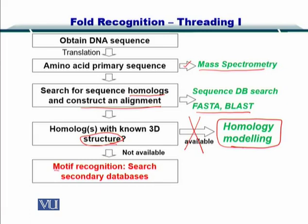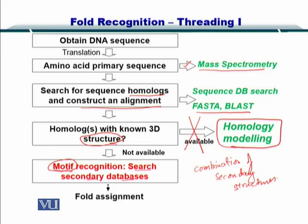In fold recognition or threading, what we do is recognize motifs — that is, combinations of secondary structures. We search the database of secondary structures. This helps us perform fold assignment, and we will define fold and discuss it further in this module.